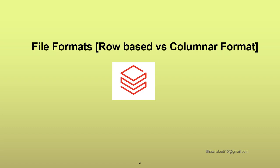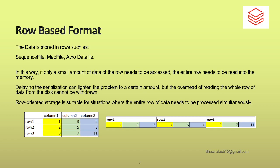Let's move ahead and see exactly what is a row-based format. Whenever we talk about row-based file formats — the sequence file, the map file, the Avro file — these are nothing but row-based file formats. With the name itself you will understand: it says row-based format, so it means that the data is actually stored in the form of rows.